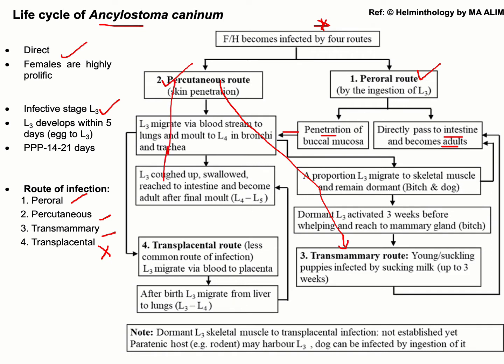Another route is the transplacental route of infection. After penetration of L3 into the body, they move to the lungs via the bloodstream, where molting occurs from L3 to L4. When these stages are coughed up and swallowed, they pass to the intestine and become adult parasites after the final molt, which is L4 to L5.